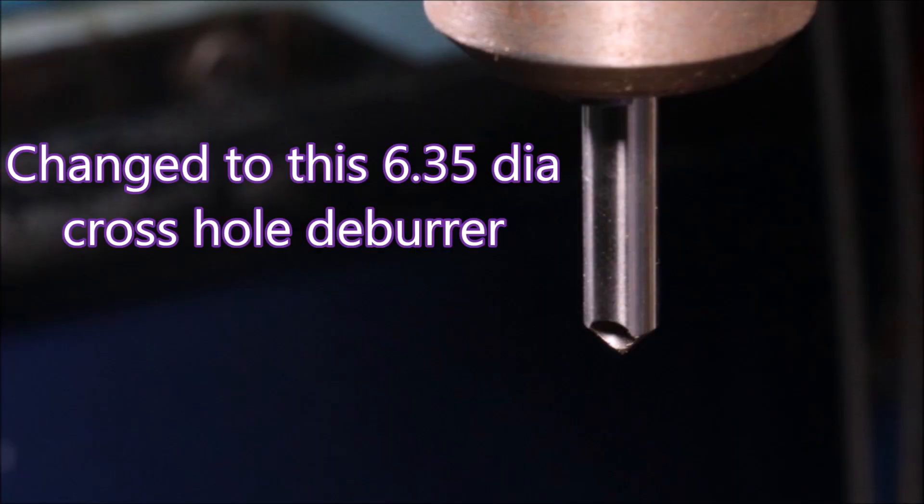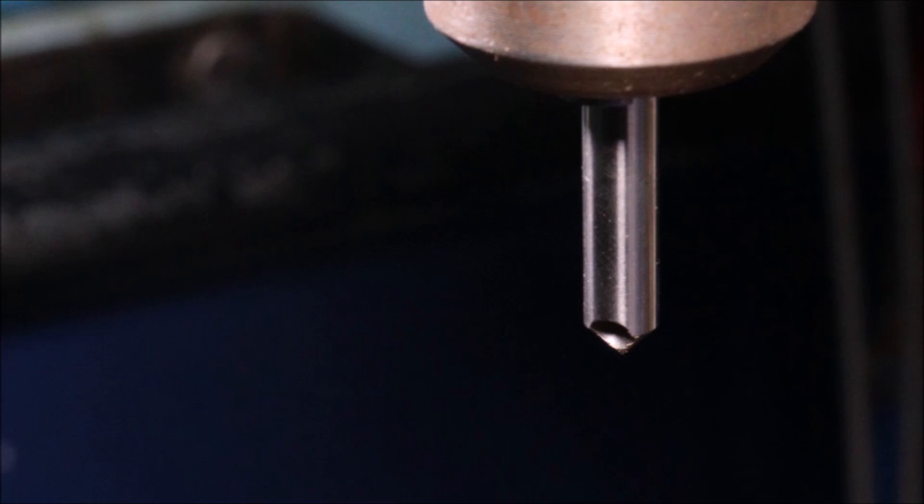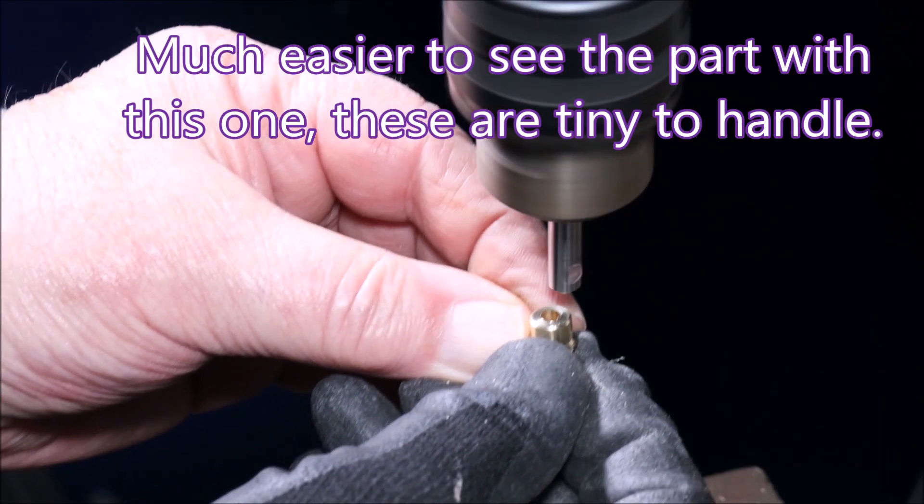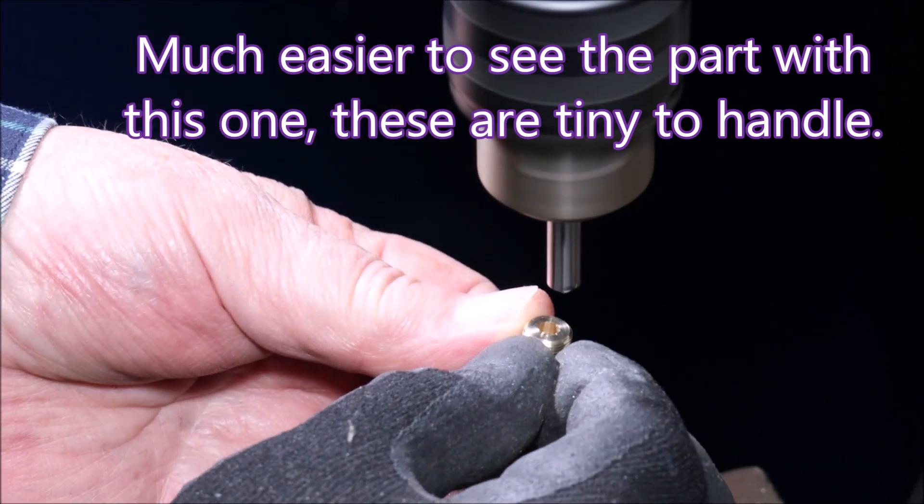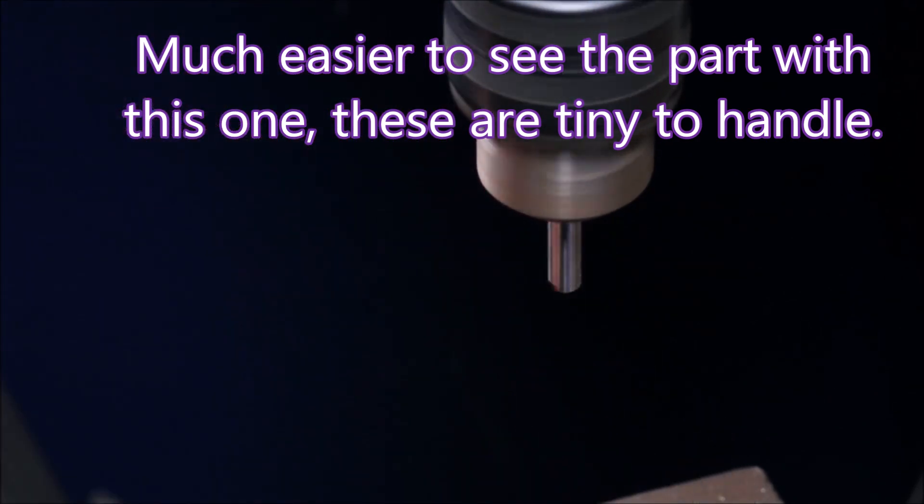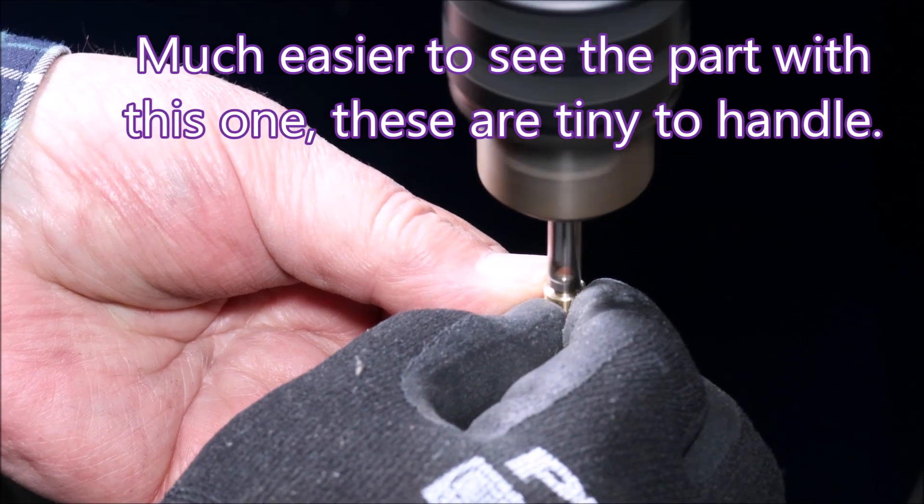So I decided to lash out and buy something that was more appropriate and it made life a lot easier. It's just a little quarter or 6.35 diameter cross-hold deburrer. And it works. It's small enough for you to still be able to see the part while you're trying to put it up to the tool. It works really well.